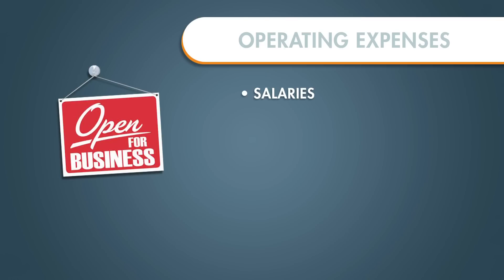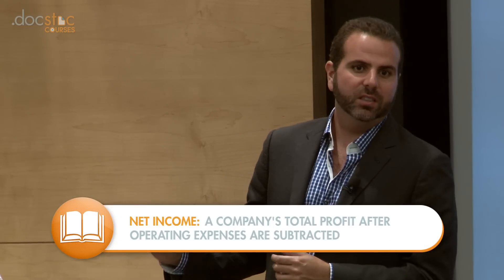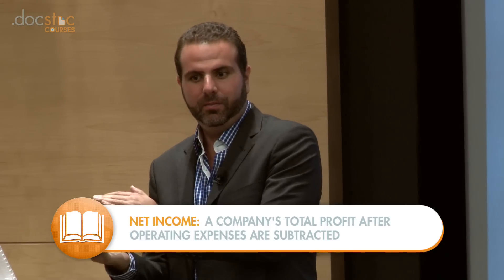Now you have all the operating expenses of the business. What are operating expenses? Those are things like salaries, rent, supplies, marketing — everything that you do to support the actual business besides the cost of goods. Let's say it costs you $100,000 in operating expenses: maybe $2,000 a month in rent, $5,000 a month in salaries, $1,000 a month in marketing. You now have a net income of $50,000 — the money that actually flows to the bottom that you get to keep at the end of the year.